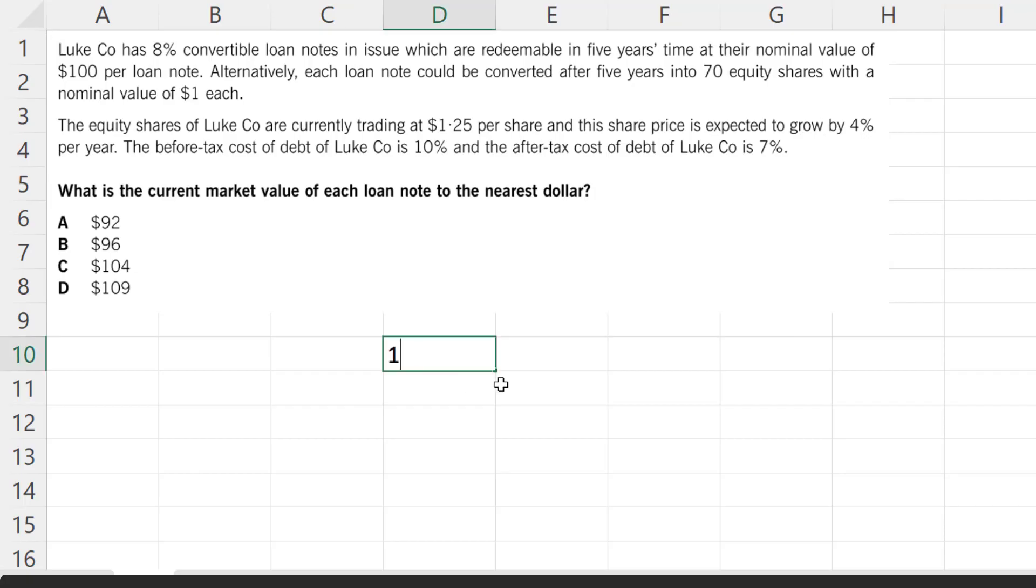So we found out now that we have five years: one, two, three, four, five. Every year we as a bond holder we're going to get $8 interest on a $100 loan note, so we can put 8 as a positive number. We know the discount rate that we're going to use is 10%. The only thing we have to figure out now is what happens at the end: will they redeem or will they convert? And we'll assume that they are rational risk-averse investors.